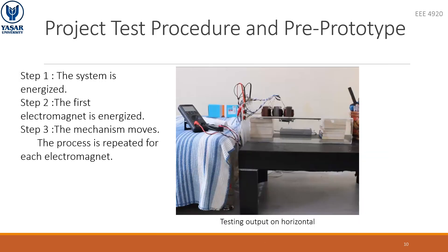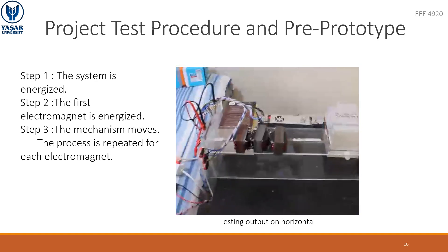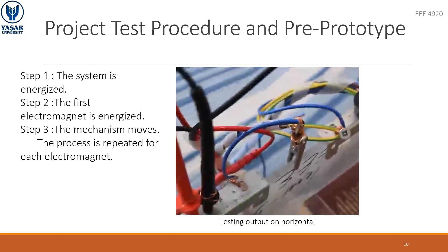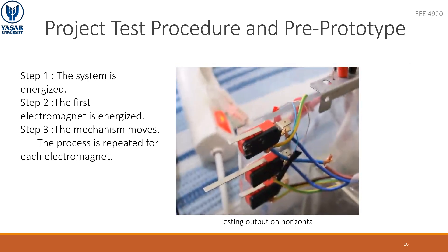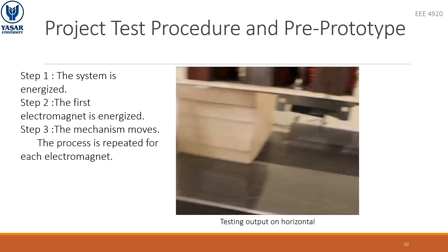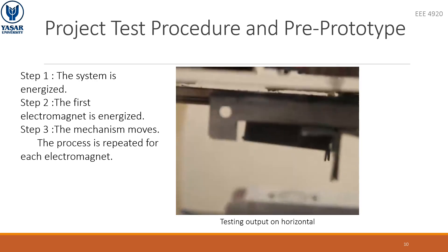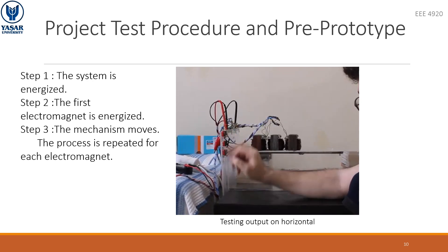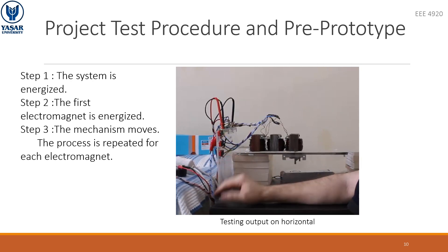In this page, there is the part where we test the project in real life. After connecting the components to the circuit properly, I energized the system and connected the voltmeter and ammeter to the circuit to see the current and voltage appearing on each electromagnet. As can be seen in the video, each switch triggers the electromagnet. The cabinets move to the right and left horizontally. Finally, after this project is completed horizontally, we will pass our test to operate in vertical position.